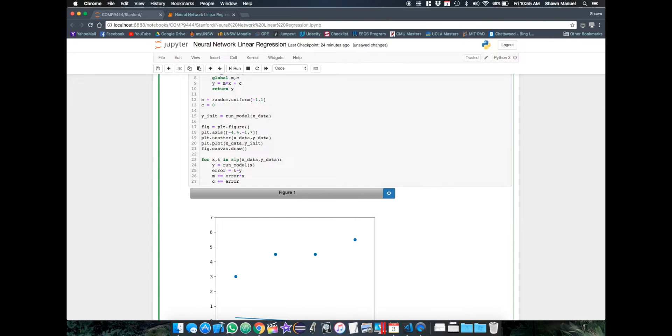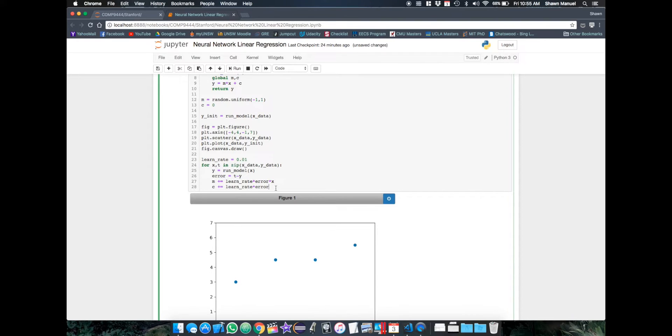But we need to do so in small steps so that our model doesn't jump around too drastically. So we'll introduce the learning rate and 0.01 is a safe value. So let's add that in there.